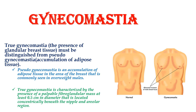Pseudogynecomastia is an accumulation of adipose tissue in the area of the breast that is commonly seen in overweight males. True gynecomastia is characterized by the presence of a palpable fibroglandular mass at least 0.5 cm in diameter, located concentrically beneath the nipple and areolar region.